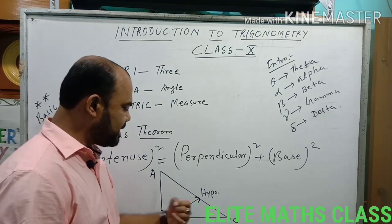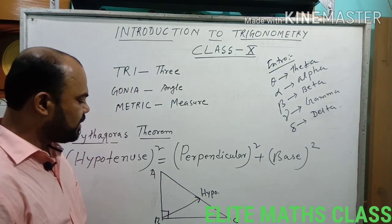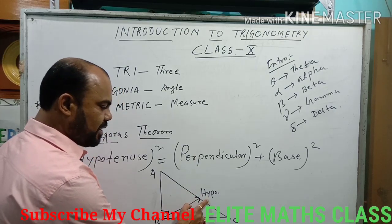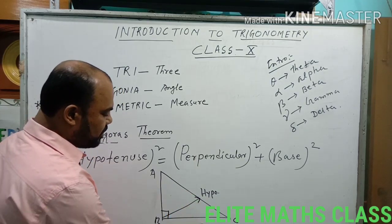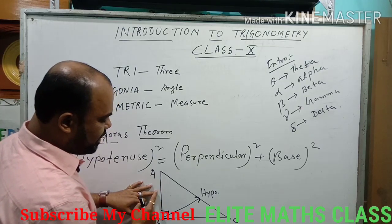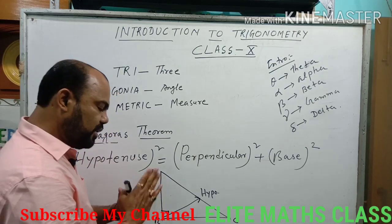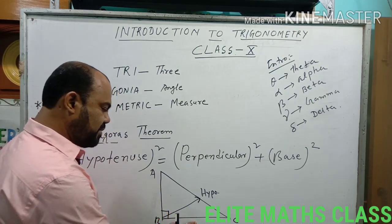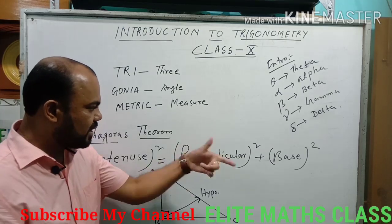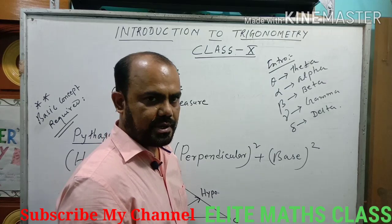Now see this right angle triangle. Let ABC be a right angle triangle. We know that the side opposite to the right angle is the Hypotenuse. The remaining two sides — one will be Perpendicular and one will be Base. You can take either one as Perpendicular. This point I am coming to later.